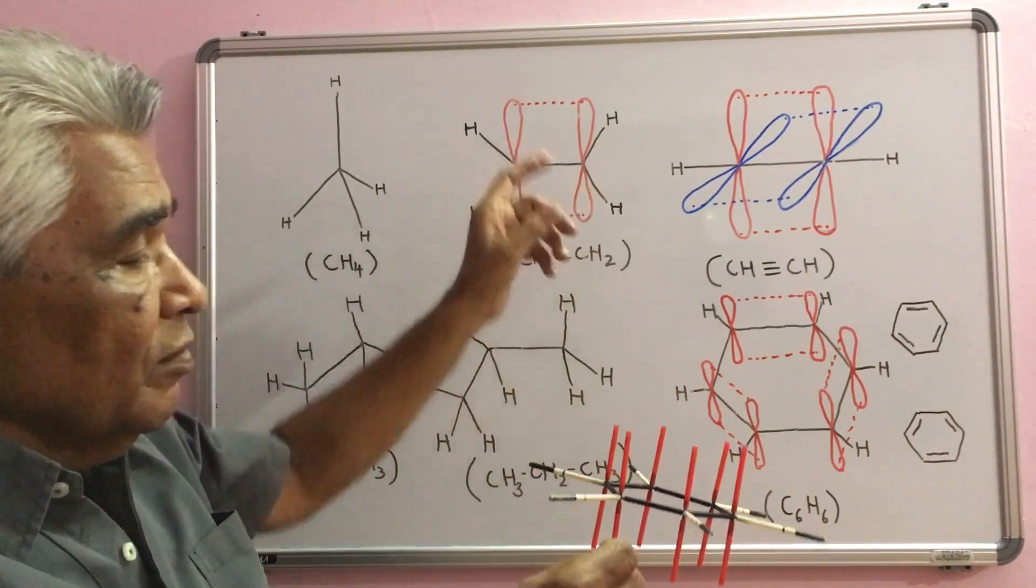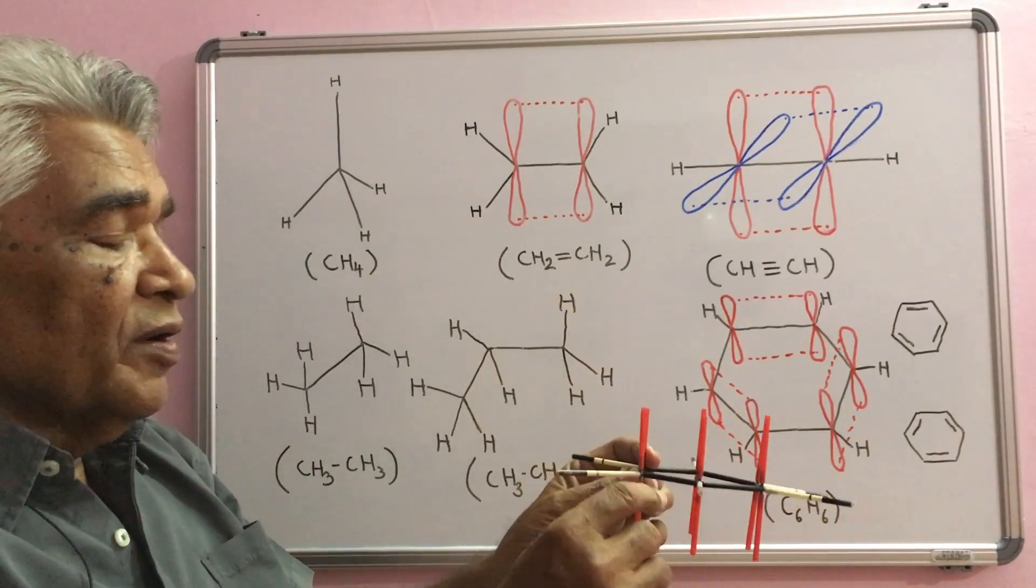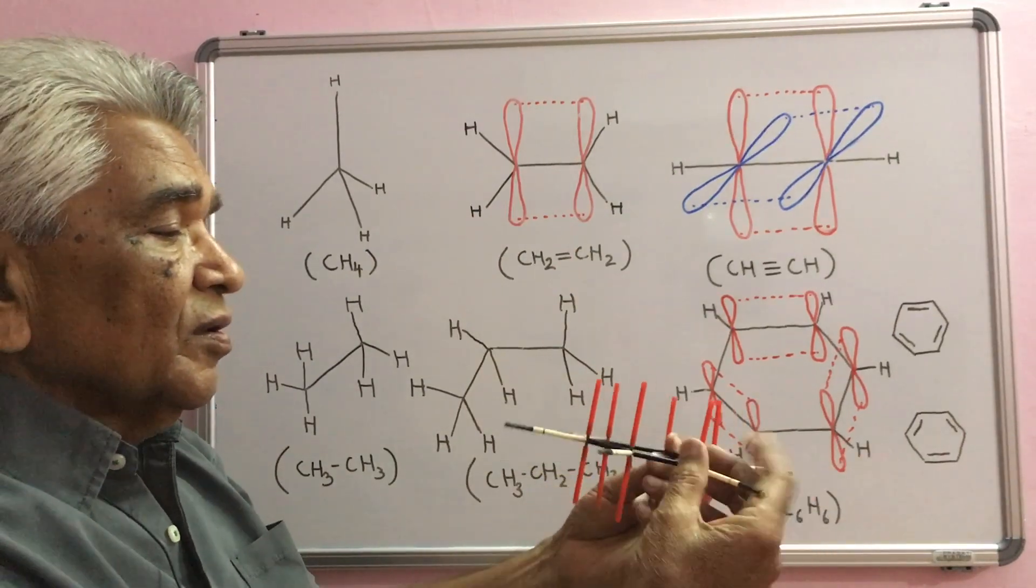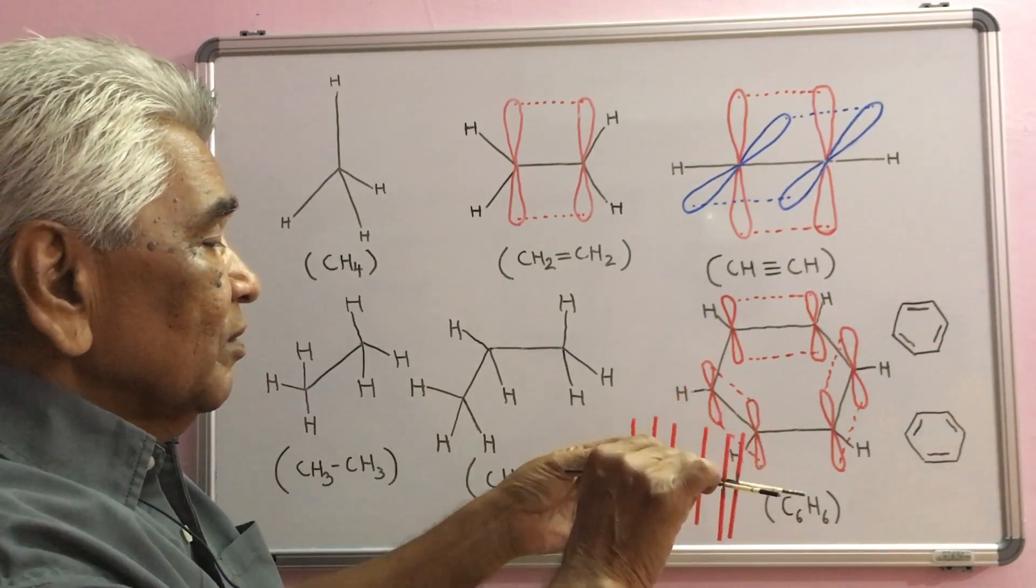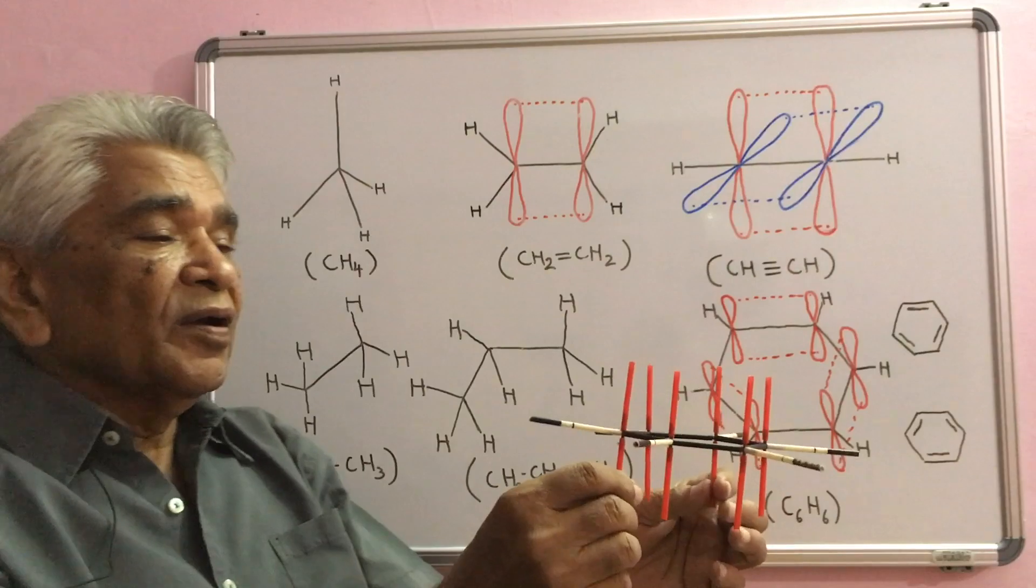The p orbital on each carbon atom stands parallel to each other here. There are six parallel p orbitals.